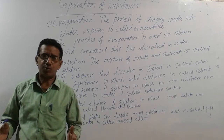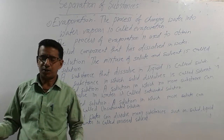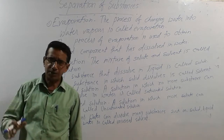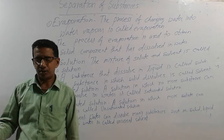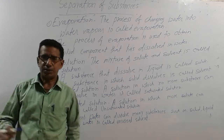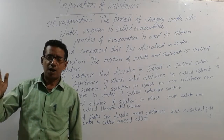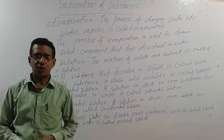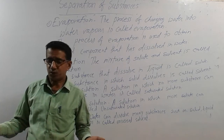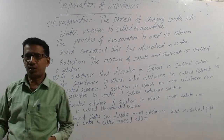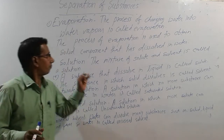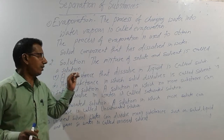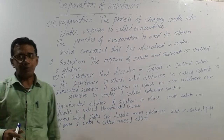When we want to separate some solid substances, we heat the water at 100 degrees Celsius. When we heat the water at 100 degrees Celsius, we see that water evaporates and the solid substance remains at the bottom. Through this process we can separate solid substances.